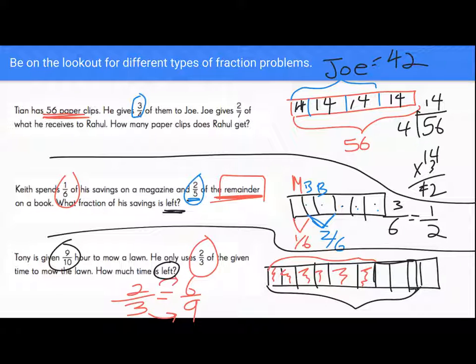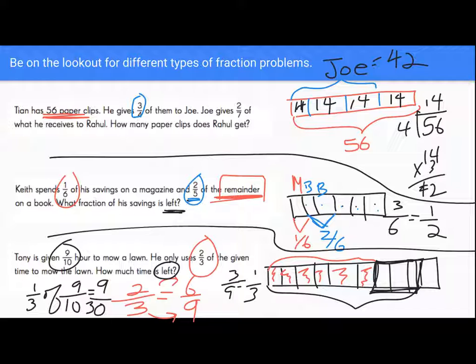Well, if we want to know what time is left, we could say, what's one-third of the nine-tenths of an hour? And if we do this math, we would find that he actually has nine-thirtieths of an hour left. But we need to simplify. We need to divide by three, so he would actually end up with three-tenths of an hour left over.